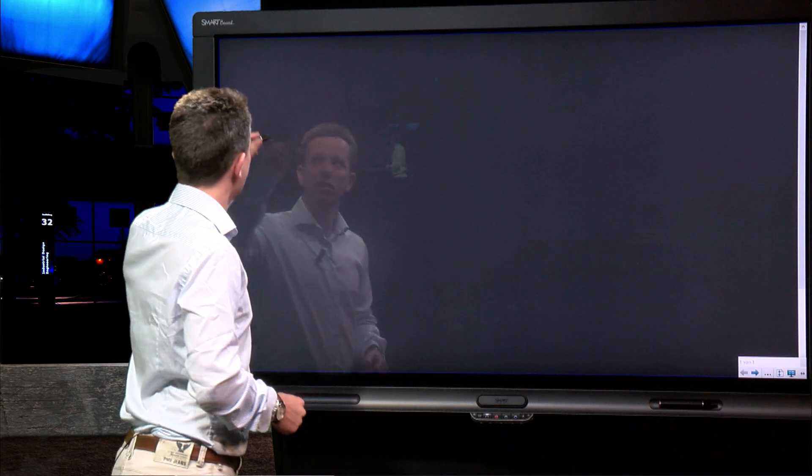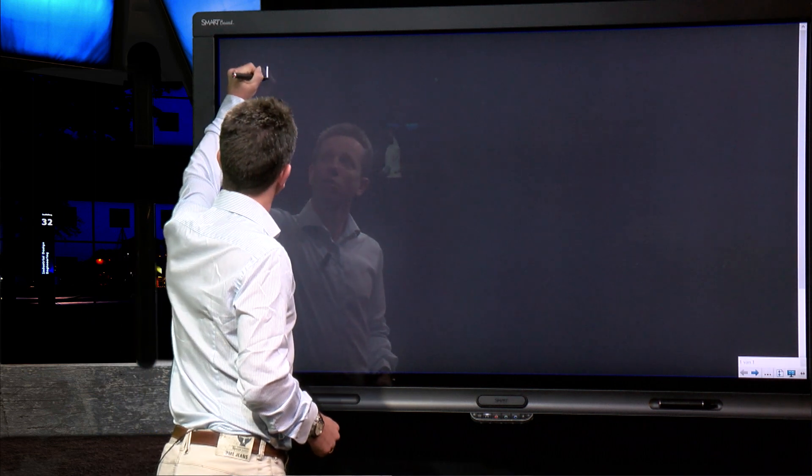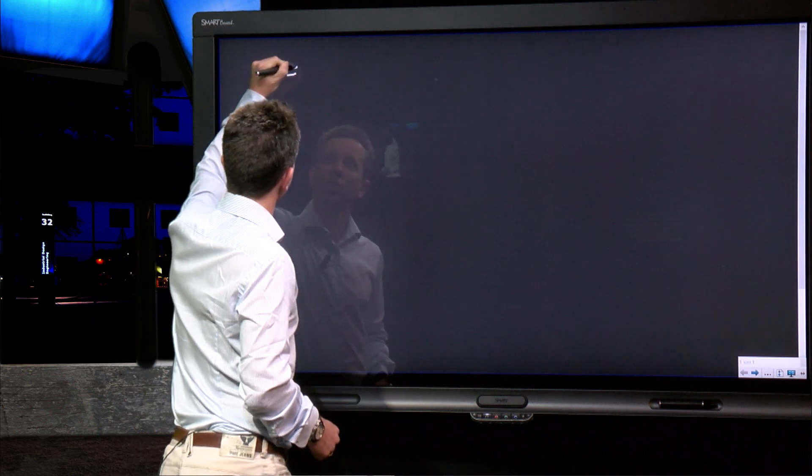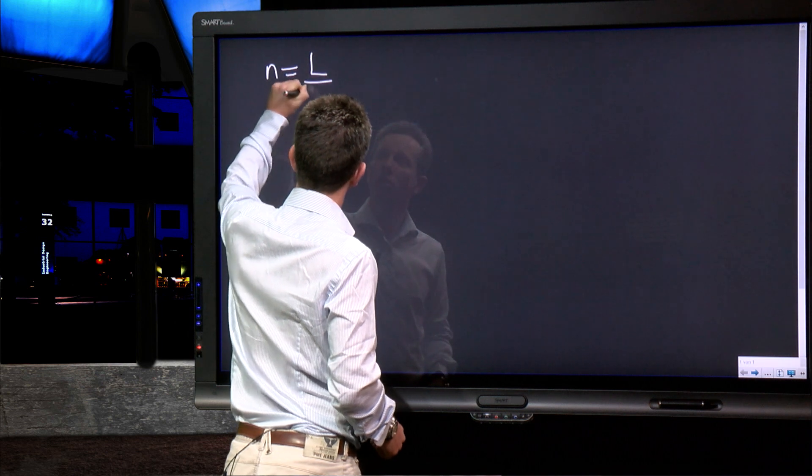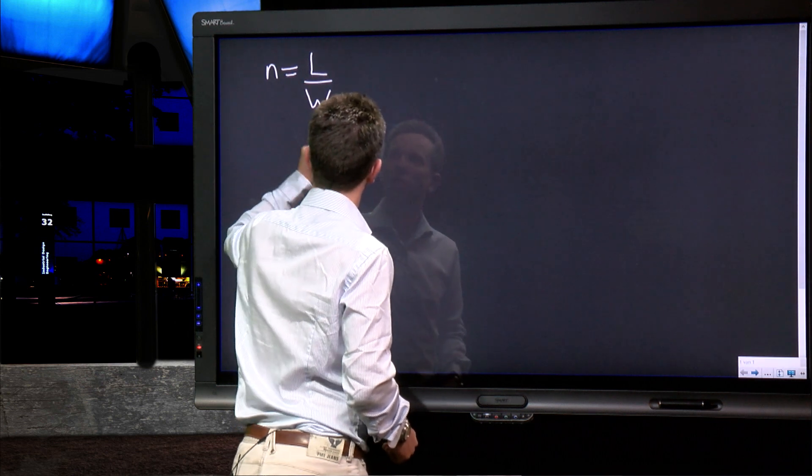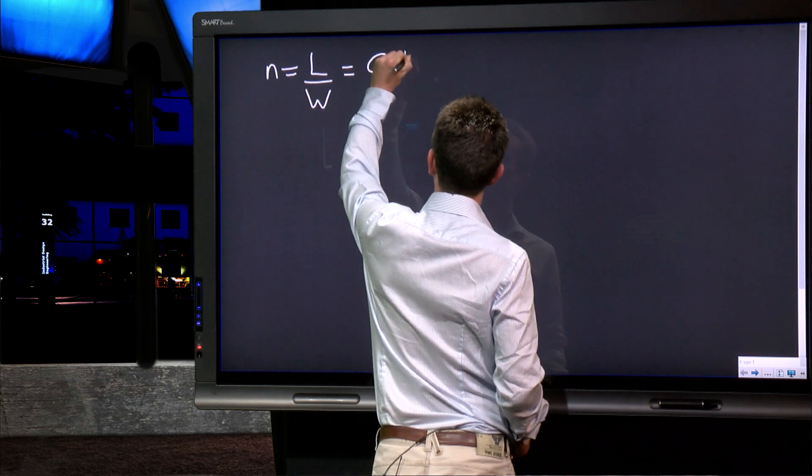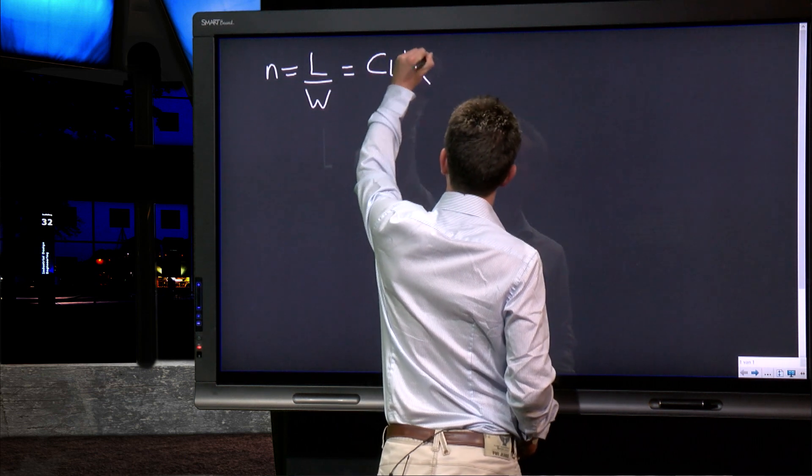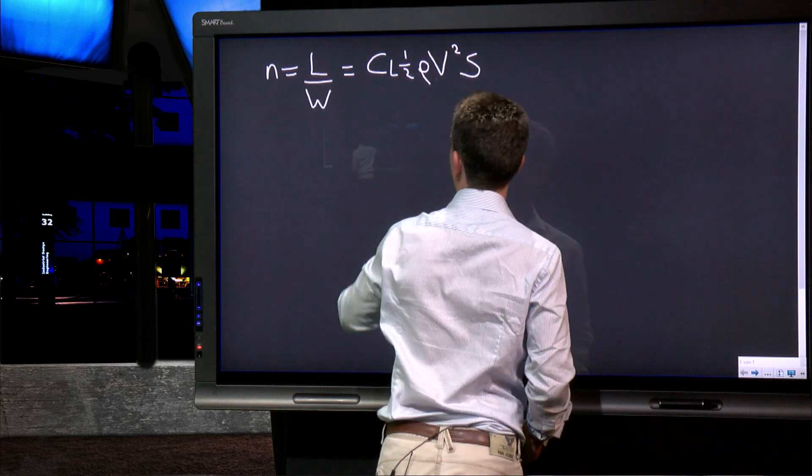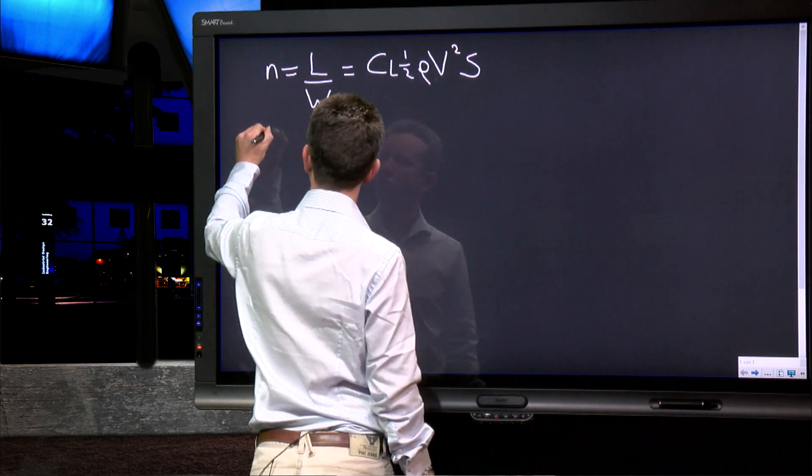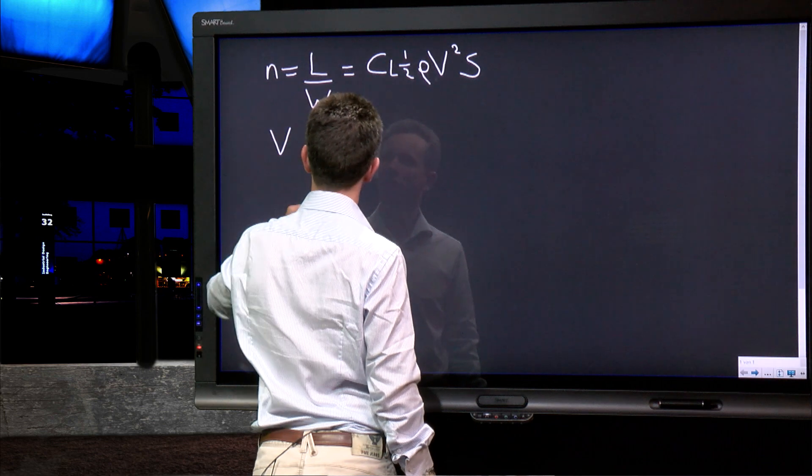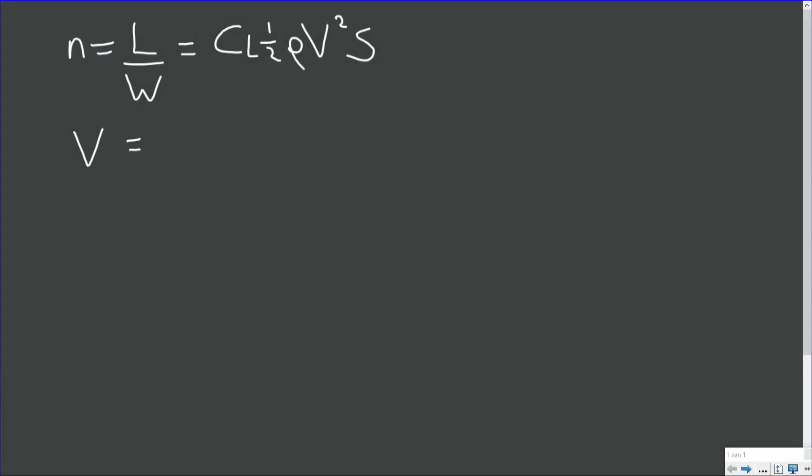So if we start with the load factor equation, load factor is by definition lift divided by weight. And lift can be expressed as CL times half rho v squared S. Now in the diagram we saw airspeed on the x-axis, so let's rewrite this equation and single out airspeed.